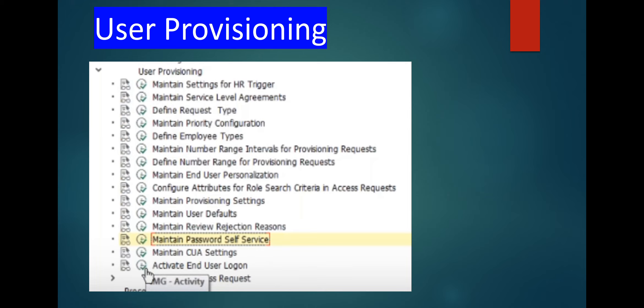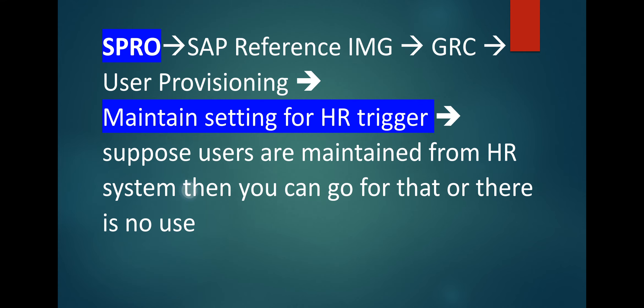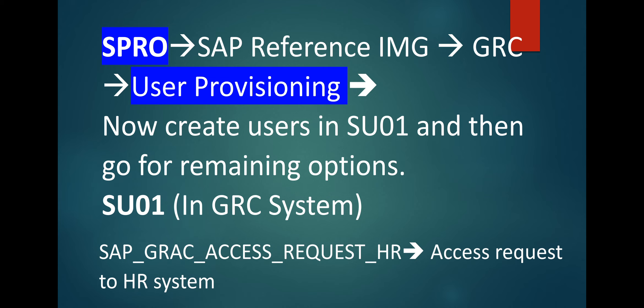We will see all possible paths one by one quickly. Go to user provisioning — SPRO > SAP Reference IMG > GRC > User Provisioning — then click on maintain setting for HR trigger. Suppose users are maintained from the HR system, then you can go for that, otherwise there is no use. Now, user provisioning creates users in SU01 and then go for the remaining options.